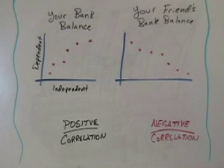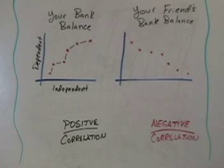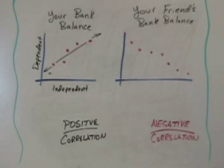In the positive correlation, as the amount of time increases, your bank balance is going up. In the negative correlation, as the amount of time increases, your friend's bank balance is going down. Now let's look at these graphs a little closer. Notice the data points on the graph of your bank balance. If I connect these points, they do not form a straight line. But that's okay — they're still a positive correlation. I can draw a line that is close to going through all the points. We call this a line of best fit. It estimates where the points are, but it doesn't exactly fit the points.